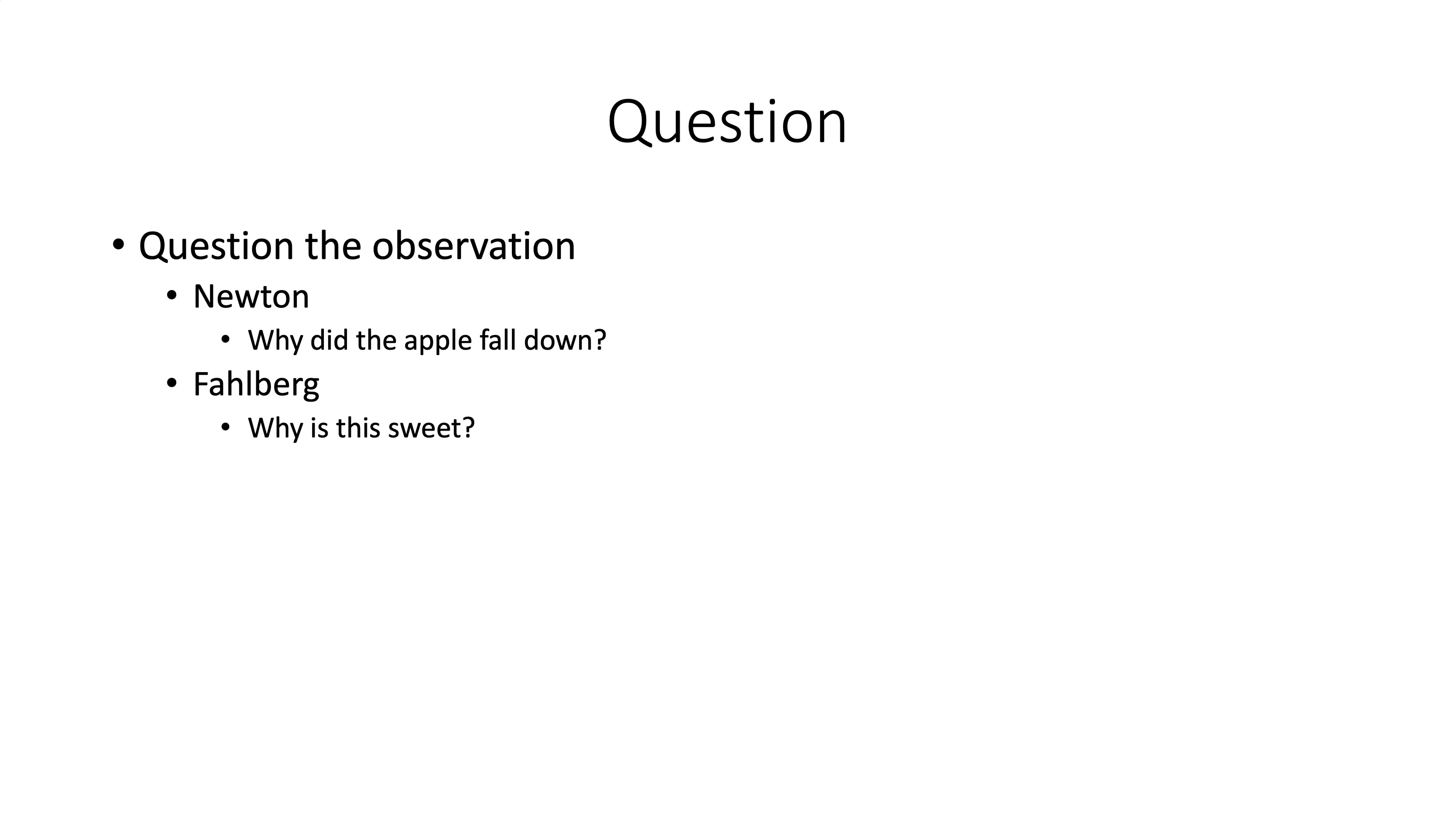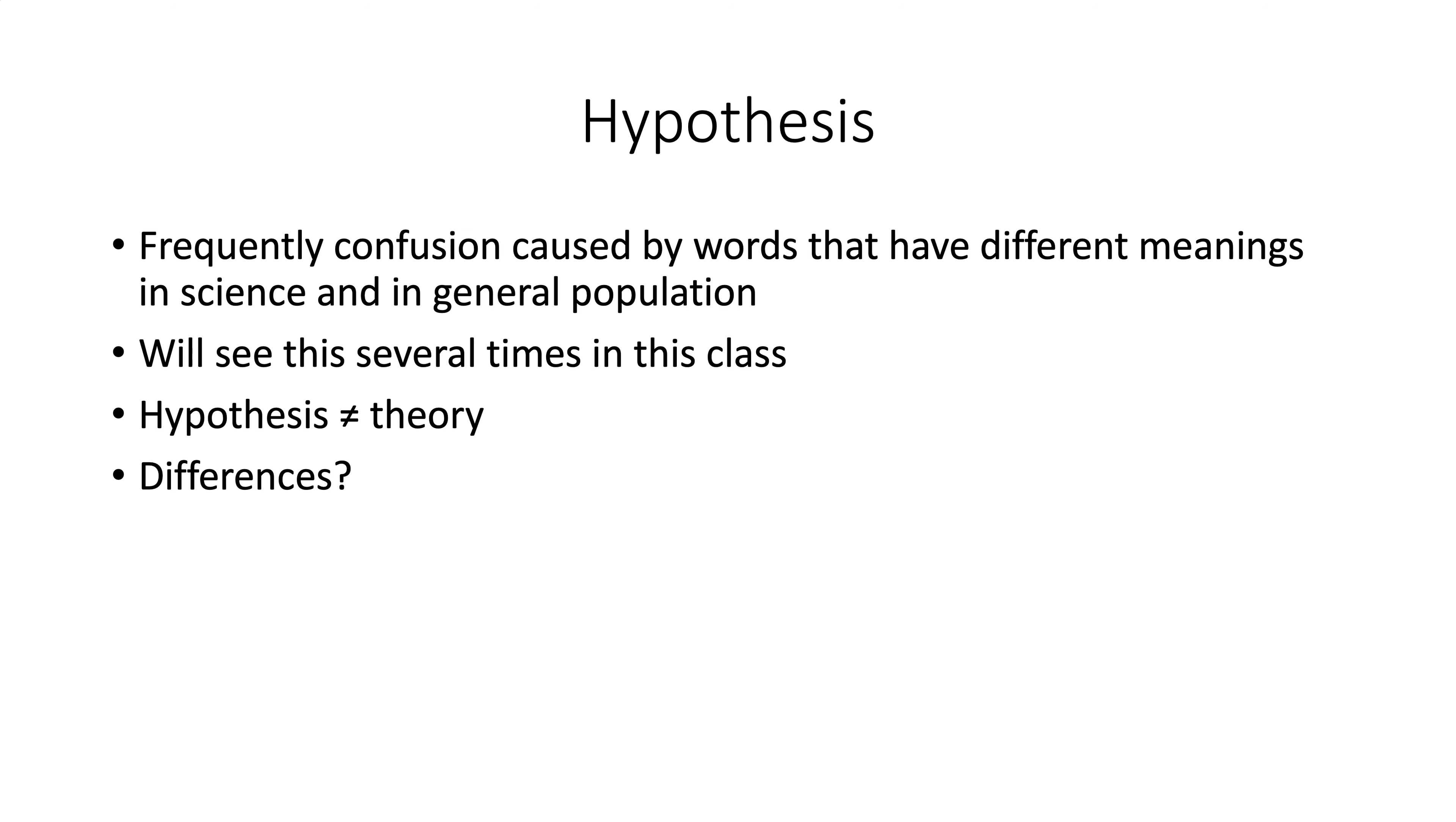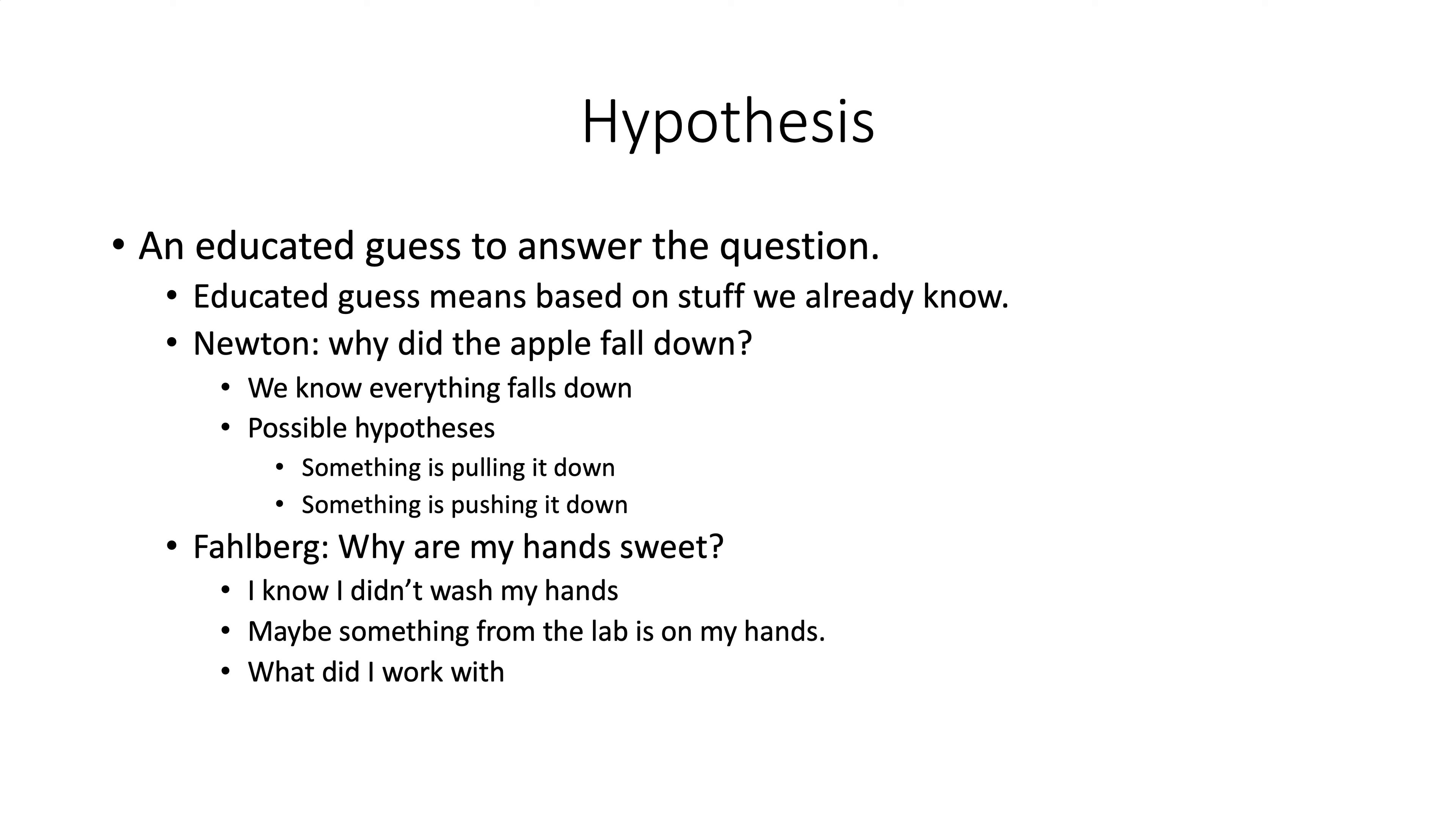The next step, this is where it gets interesting, is what do we do after we ask the question? We try to answer the question. You're going to see several times in this class that there's going to be some words that come up that you've heard before, but the definitions can be very different scientifically. And this has caused some problems. This will be one of the first examples. When scientific information gets out into the general population and scientists use certain words, scientists are thinking it means one thing, but the general population thinks it means something else. For example, the word theory and hypothesis. A hypothesis is not the same thing as a theory.